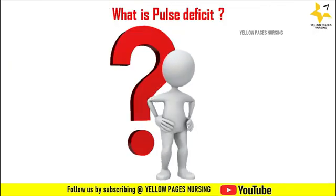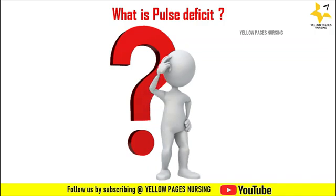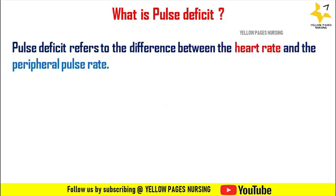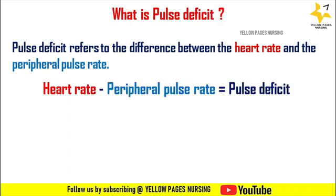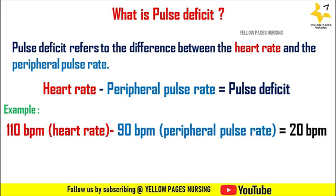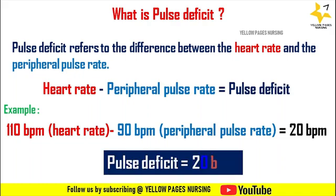Next comes pulse deficit. Pulse deficit refers to the difference between the heart rate and the peripheral pulse rate. It is determined by taking both rates simultaneously and subtracting the peripheral pulse rate from the heart rate. For example, if the heart rate is 110 beats per minute and the peripheral pulse rate is 90 beats per minute, the pulse deficit is 110 minus 90, which equals 20 beats per minute.